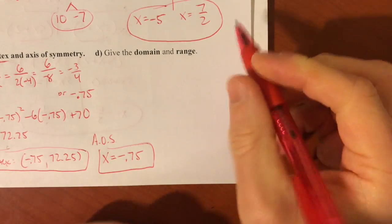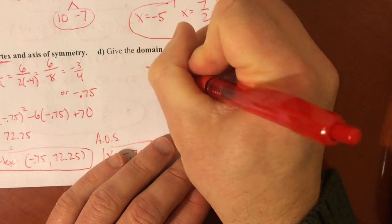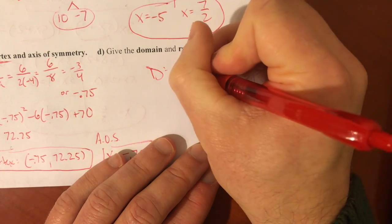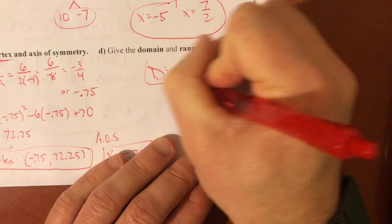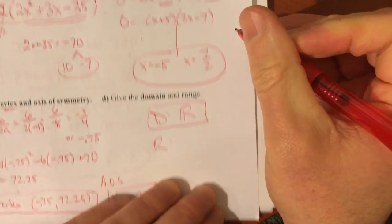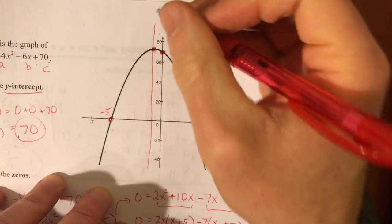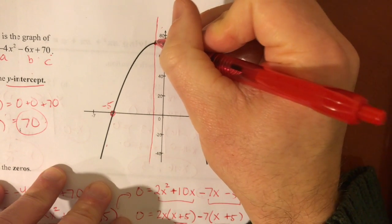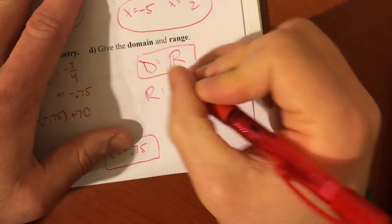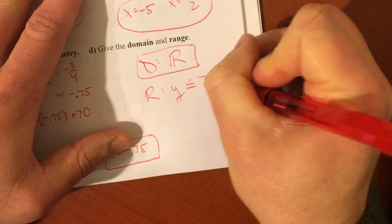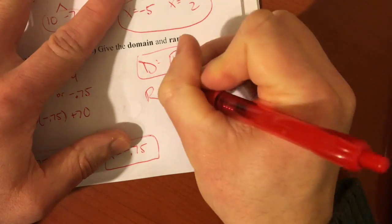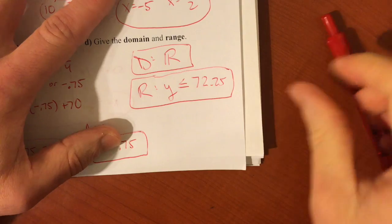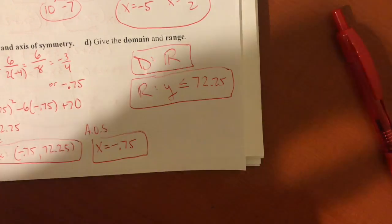And the last two things, the domain and the range. Domain is the set of all x values. And for this, you can have any x value you want. It's all real numbers. Classic. The range, however, that's what you needed the vertex for. The very highest y value was 72.25. So all the y values are less than or equal to 72.25. That was an old question. Hopefully you still remember it. Okay. Good luck. Let me know if you got any questions.